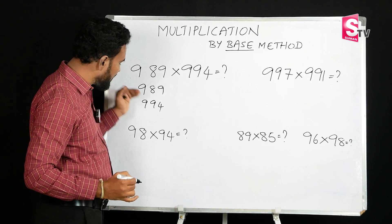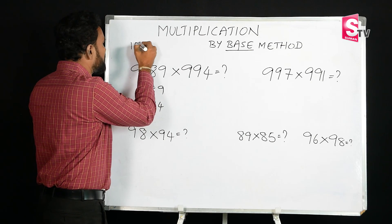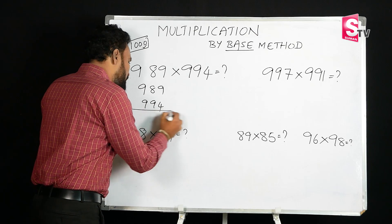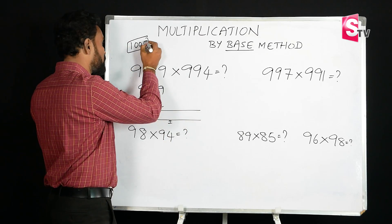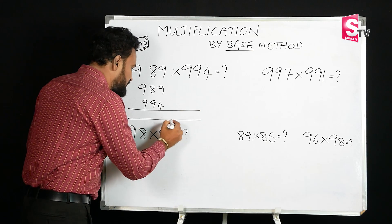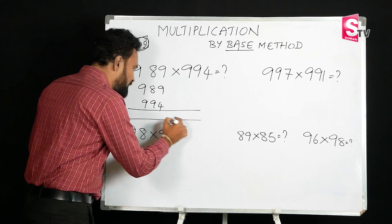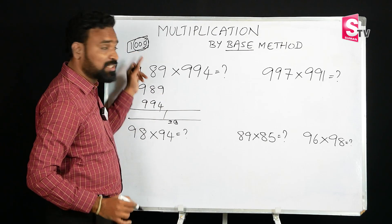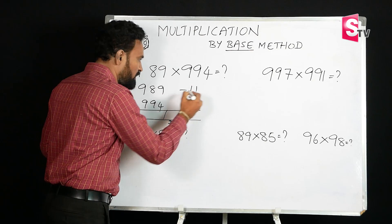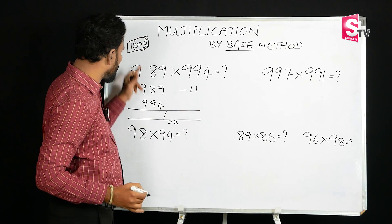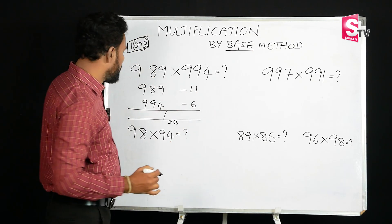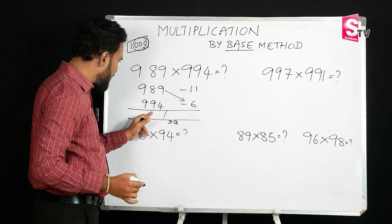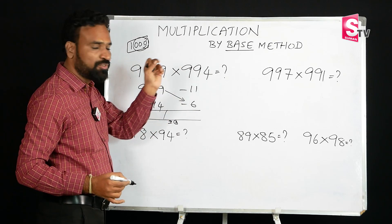For 989 times 994, both numbers are close to 1000, so we use 1000 as the base. Since the base is 1000, the second part will have 3 digits. The deficiency of 989 from 1000 is 11, and the deficiency of 994 from 1000 is 6.